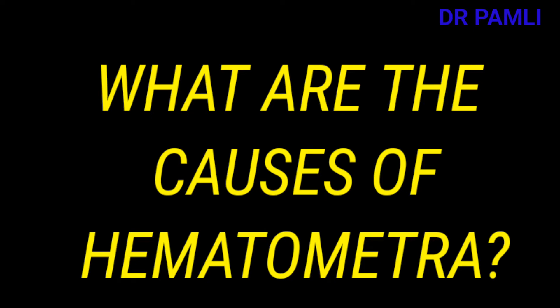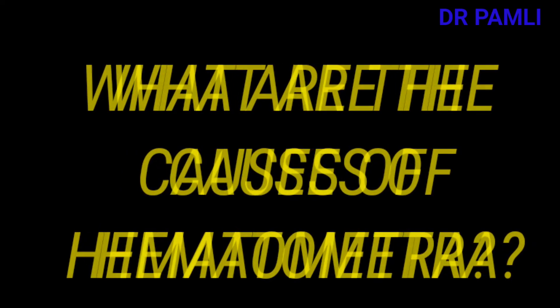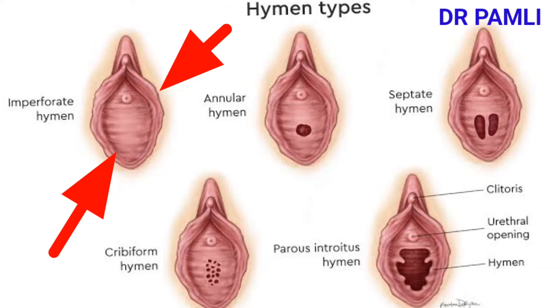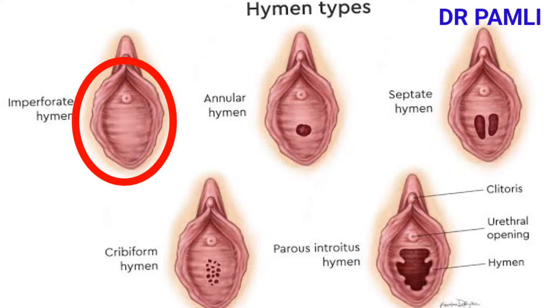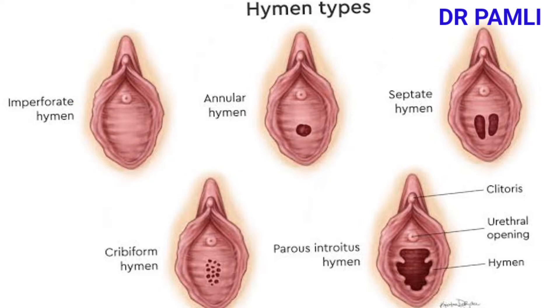Hematometra is caused by several factors. One of the causes is congenital abnormalities, the first of which is imperforate hymen — a hymen which has no opening. The hymen spans around the vaginal area, and when there is no hole or opening, during menstruation blood will not be able to flow out from the uterus to the vaginal area, leading to either hematometra or hematocolpus.